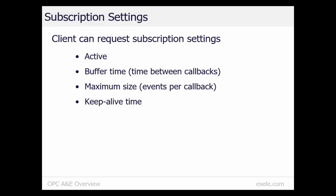In addition to the filter, a subscription has a few properties that allow the client to control some aspects of event delivery. Active indicates if the subscription should receive events or not, allowing the client to turn the subscription on or off. Buffer time is the minimum time between sending of events to the client. Maximum size is the maximum number of events that will be sent to the client in one callback. Keep Alive time requests that the OPC A&E server send heartbeat events if no real events have been sent within the specified Keep Alive period, allowing a client to know that the subscription is healthy even if real events are not occurring.